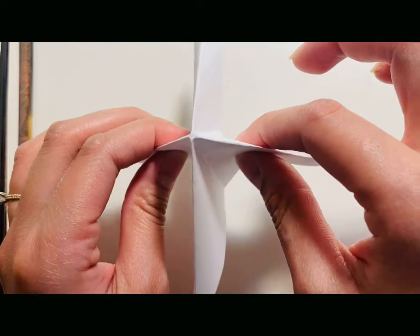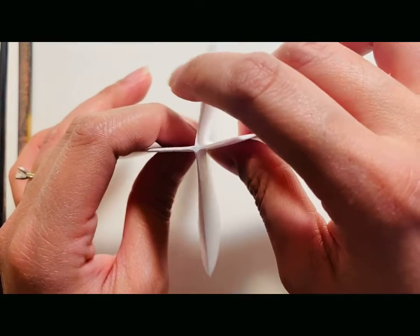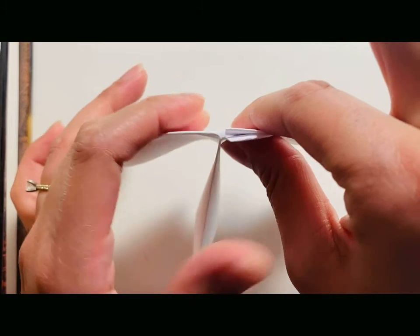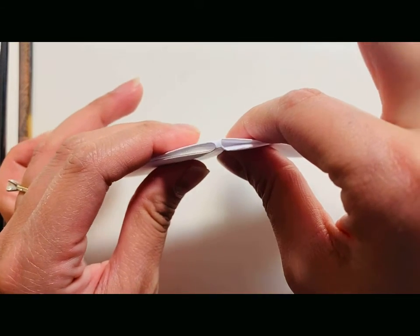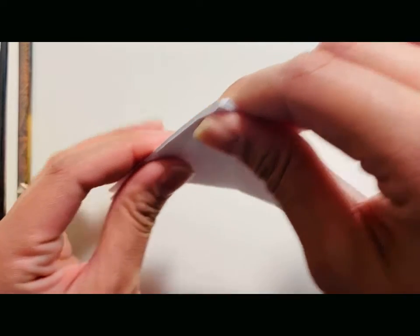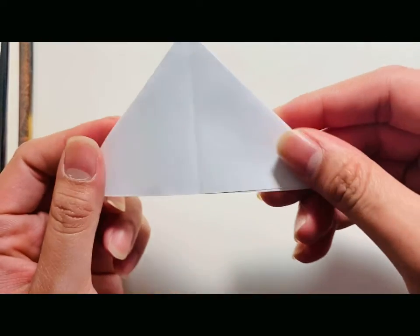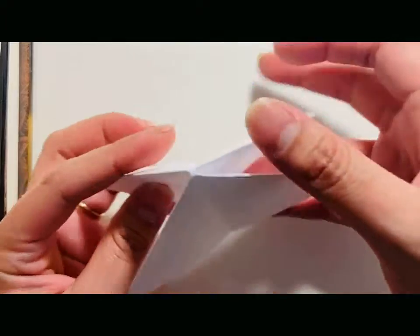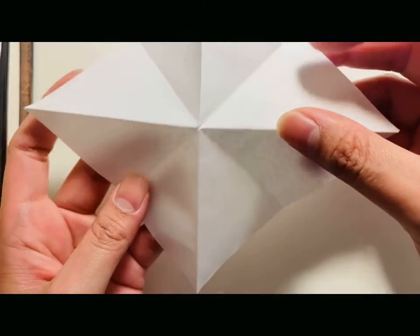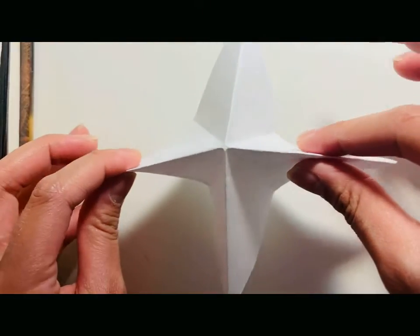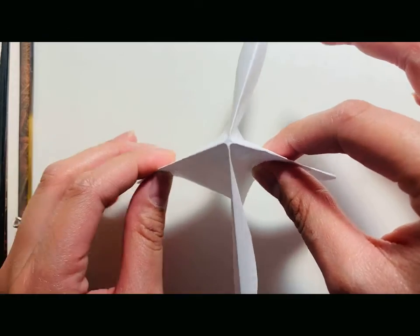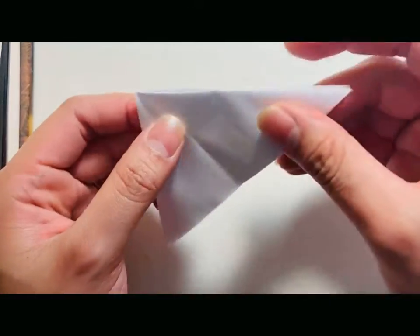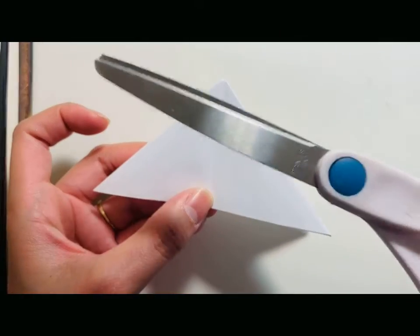So you can see it's kind of like a star, and then I'm going to fold one of the flaps to join one side and then the other flap to join the other side so you end up with a triangle shape. I'm going to do it again and you have a triangle shape. This is optional, but you can take your scissors...